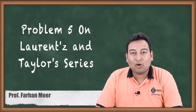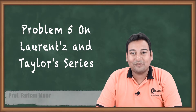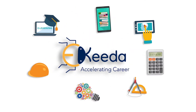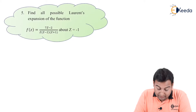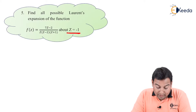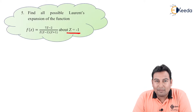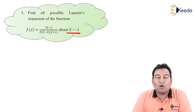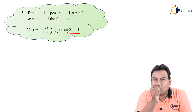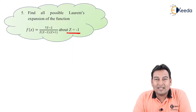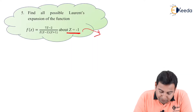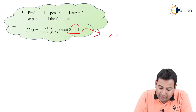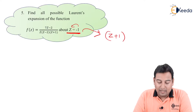Hello friends. In this video we will be discussing the last problem, that is the 5th problem on Laurent and Taylor series. This is the given problem. Here it says expand about z equal to minus 1. We have solved 4 problems till now. The first 3 problems were similar, expanding about the origin or z equal to 0. In the 4th problem we saw a slight twist — expanding about z equal to 4, or in powers of z minus 4. The 5th problem is quite similar to the 4th one. Here we need to expand about z equal to minus 1, that is in powers of z plus 1. So let us start solving the problem.